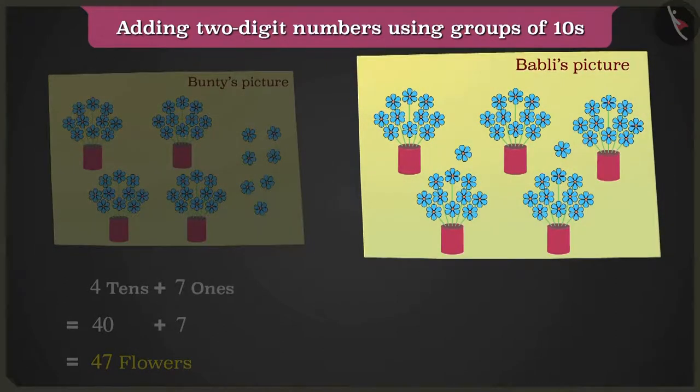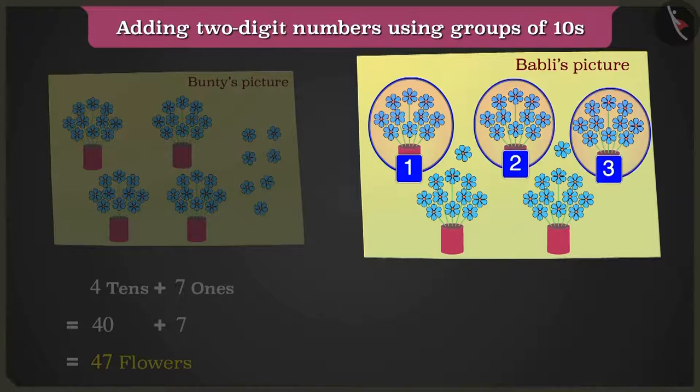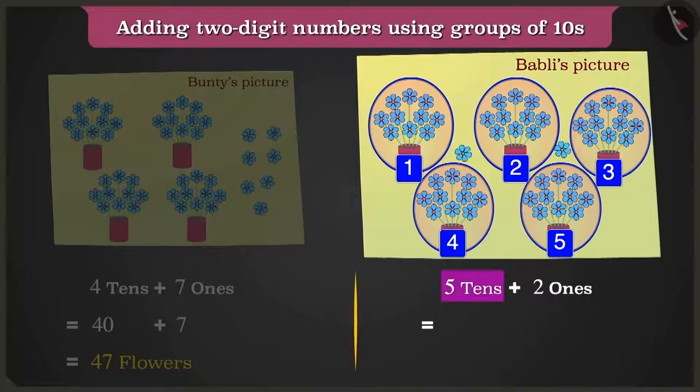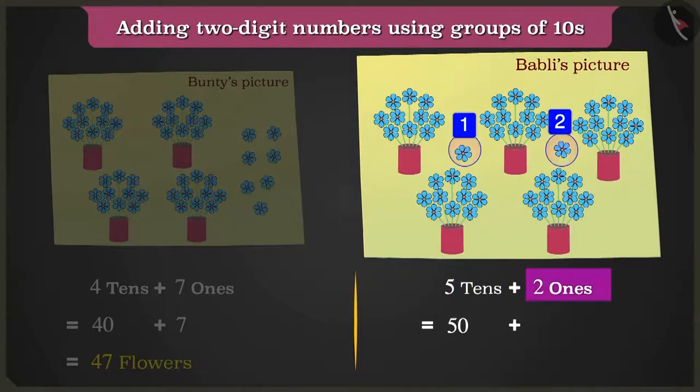Bubbly's drawing paper has one, two, three, four and five flower pots of ten flowers each and two loose ones. So here, there are five tens that are fifty and two ones that are two, fifty and two in total fifty-two flowers.